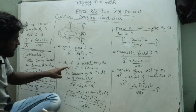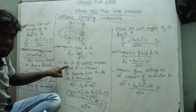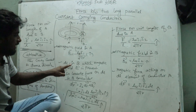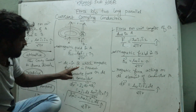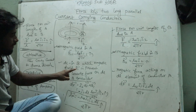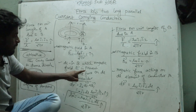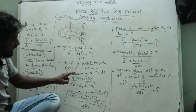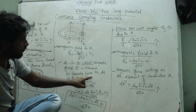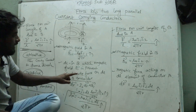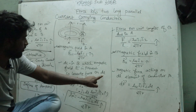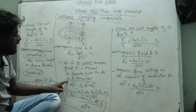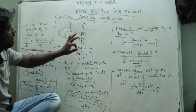DL is the small element in conductor B in which magnetic field B1 is present. So we calculate the Lorentz force on DL. The Lorentz force acts on the current element DL in conductor B.